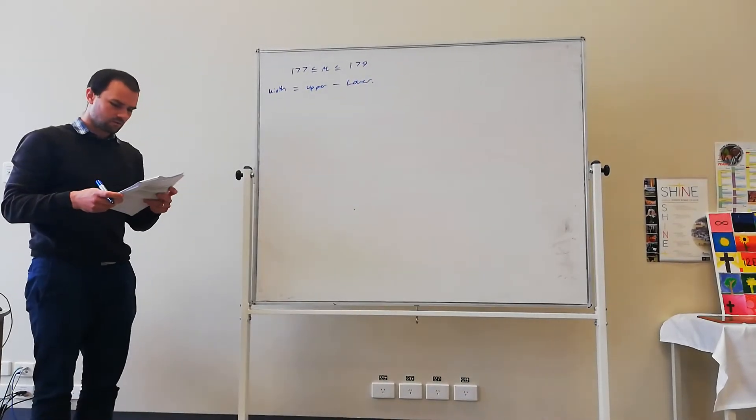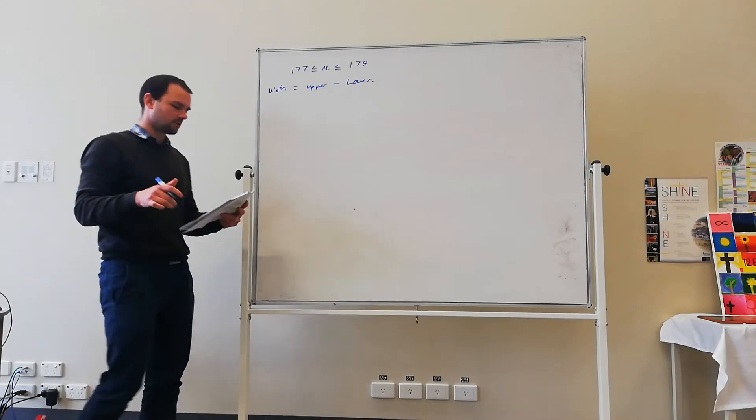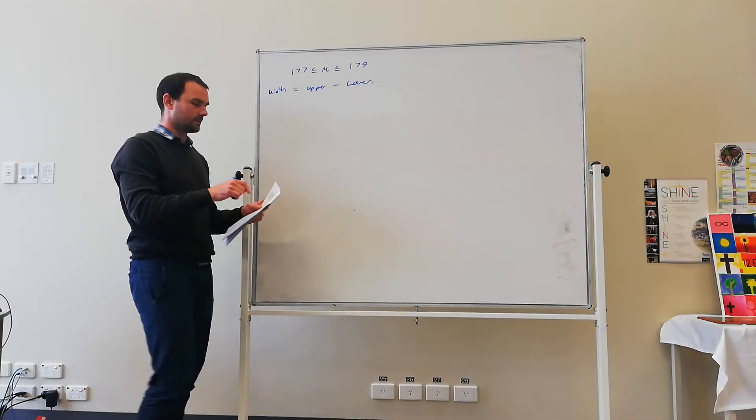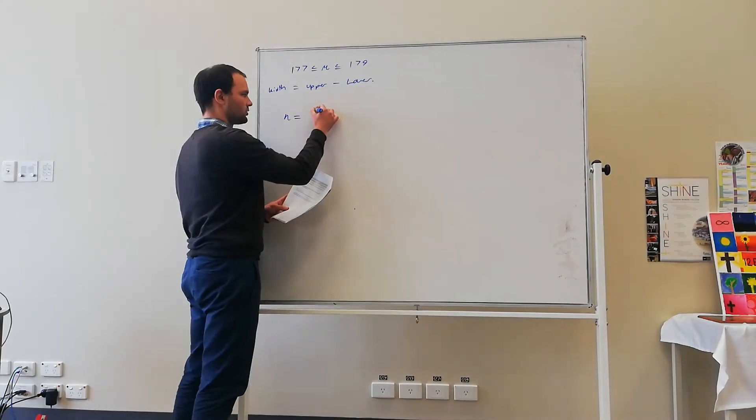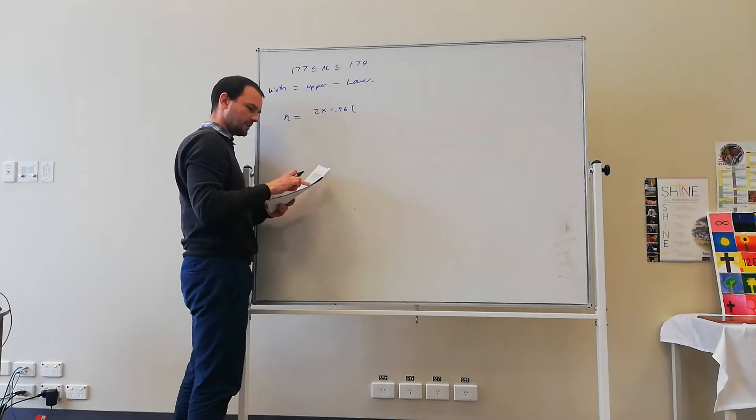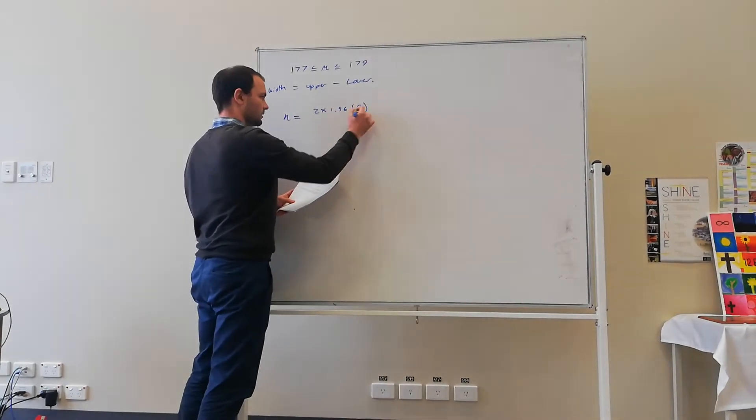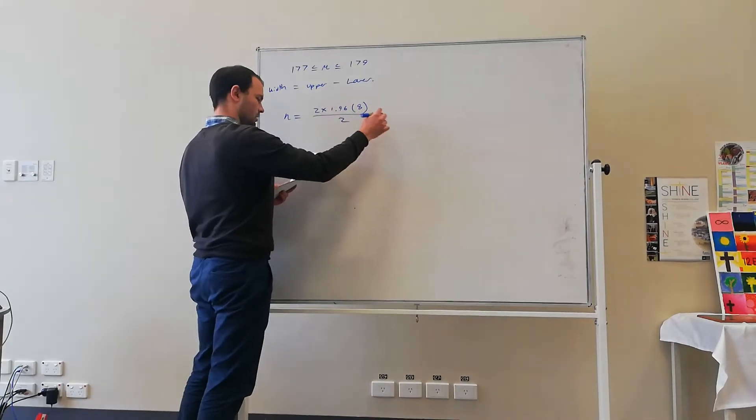So in this example, how many students need to be sampled to find a 95% confidence interval with width of 2cm? So we're going, n is equal to 2 times 1.96 times the standard deviation, which is 8, divided by the width, which is 2, and squared.